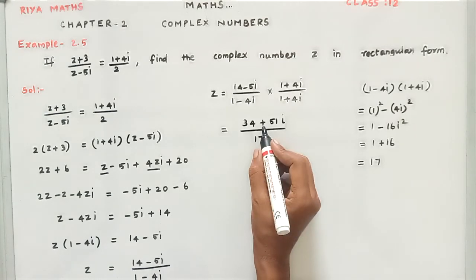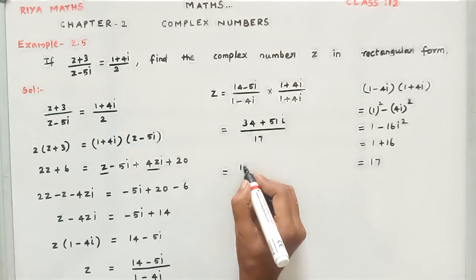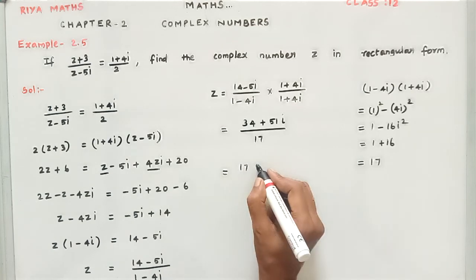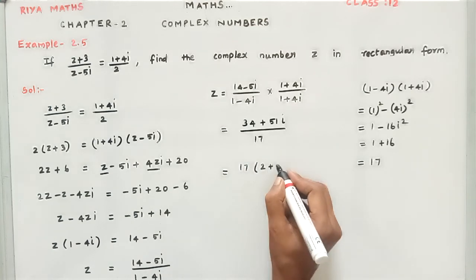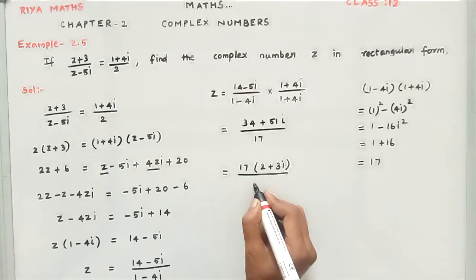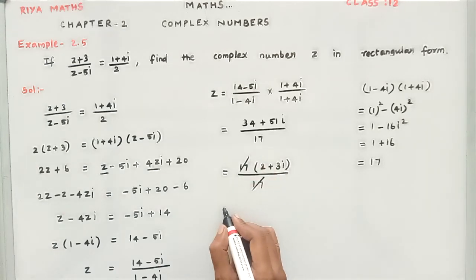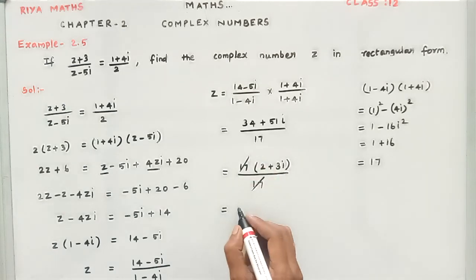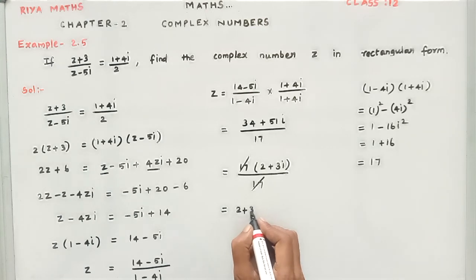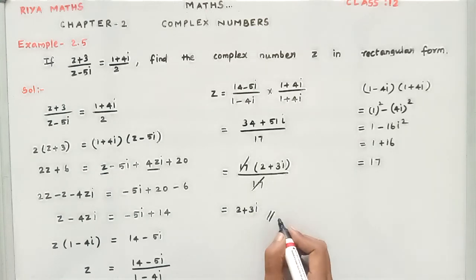We can factor 17 from the numerator: (34 + 51i) / 17 = 17(2 + 3i) / 17. The 17s cancel, leaving 2 + 3i. So z = 2 + 3i is our answer in rectangular form.